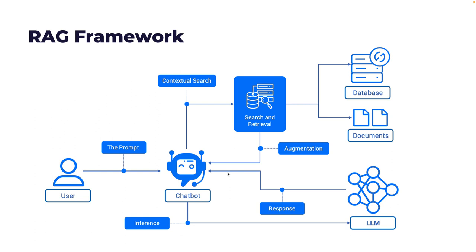The large language model responds through the inference call, and the chatbot goes back to the user interface where the user can see the output. This is the RAG framework. We have built all the steps leading up to RAG - word embeddings, vector database, and semantic search. Now we're going to put all of this together to build an end-to-end Q&A application where we can ask the Llama 2 7-billion parameter model anything about Oscars 2023, because we provide just enough context for the LLM to respond.